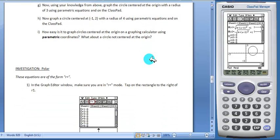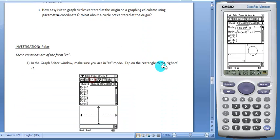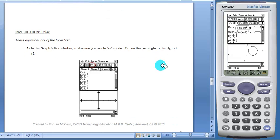The third investigation has students working with the polar coordinate system. To graph functions in this form, make sure you are in r equals mode. So we can change it from x sub t to r equals. And now we're in the polar coordinate system.